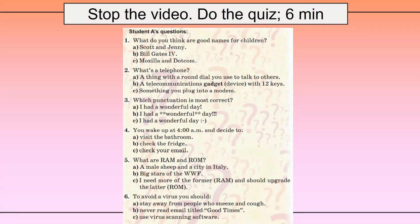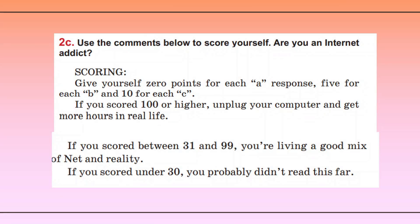Stop the video and do the quiz. You have 6 minutes. Now use the comments below to score yourself. Are you an Internet addict? Give yourself 0 points for each A response, 5 for each B, and 10 for each C. If you scored 100 or higher, unplug your computer and get more hours in real life. If you scored between 31 and 99, you are living a good mix of net and reality. If you scored under 30, you probably didn't read this far.